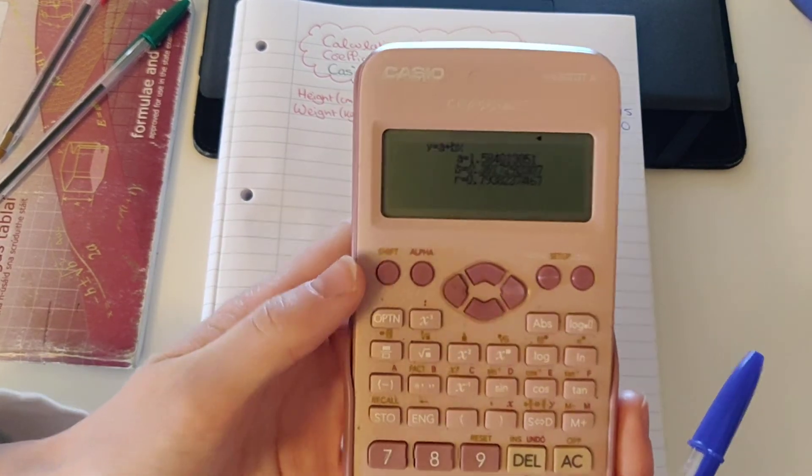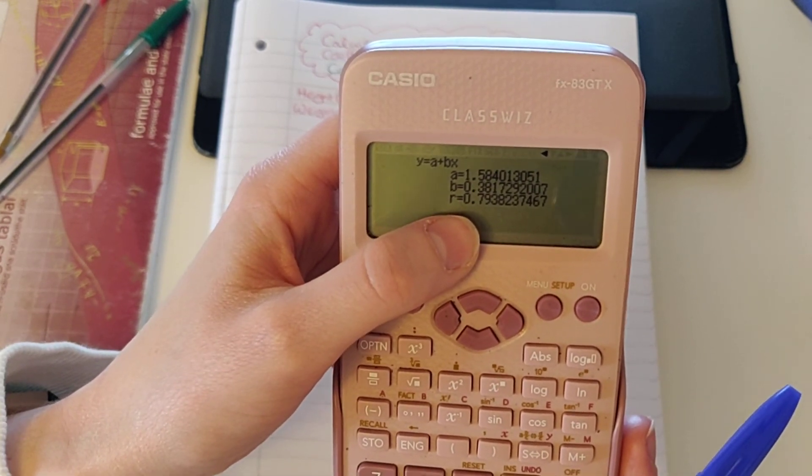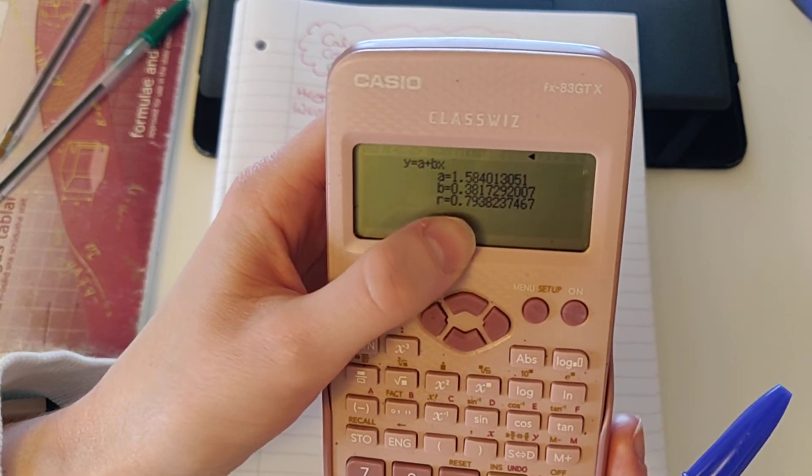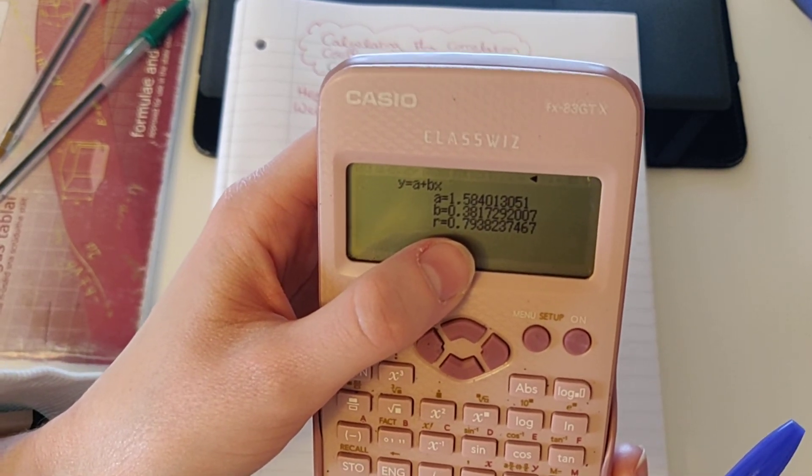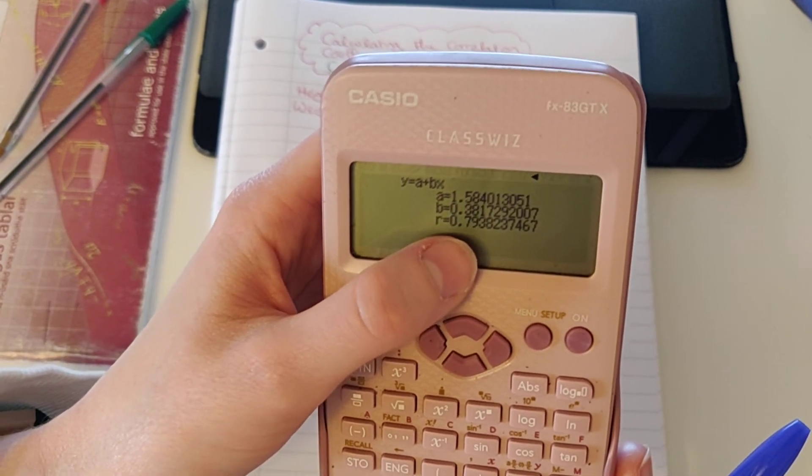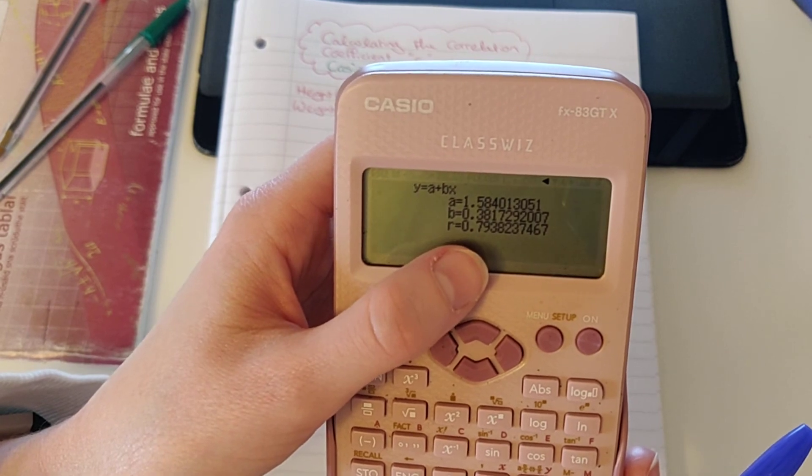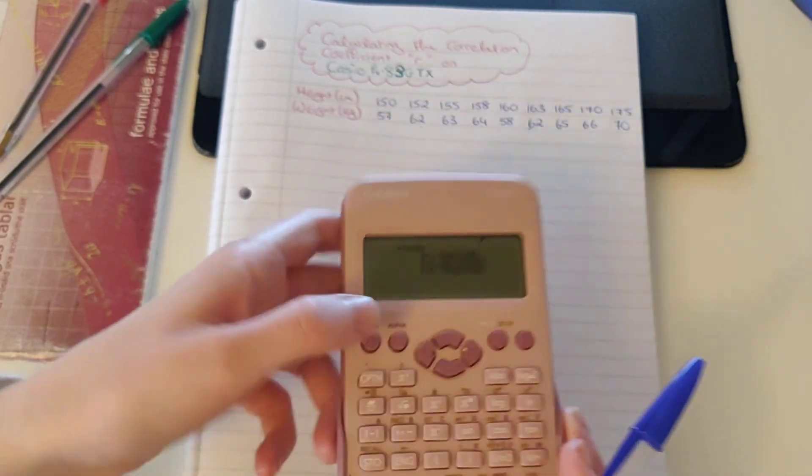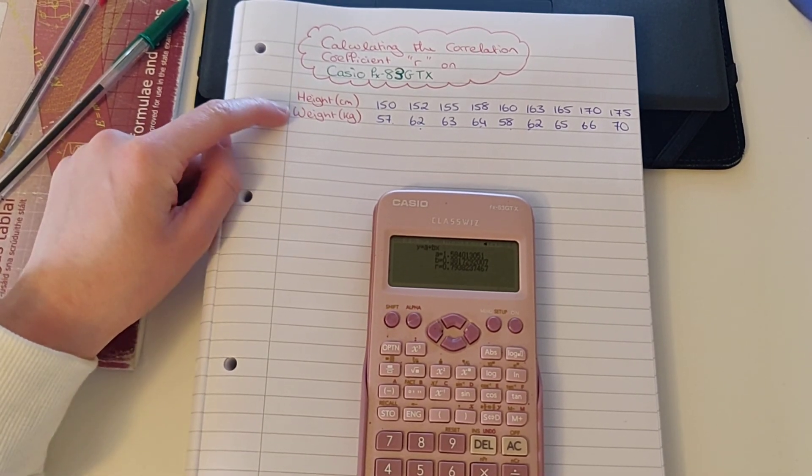And now I can see that I have three different values: A, B, and R. My R value is my correlation coefficient, which I can see here is 0.79, a positive 0.79. So we have a positive correlation which is very close to 1. So I would describe that as a strong positive correlation, meaning that as my height increases, my weight proportionally increases.